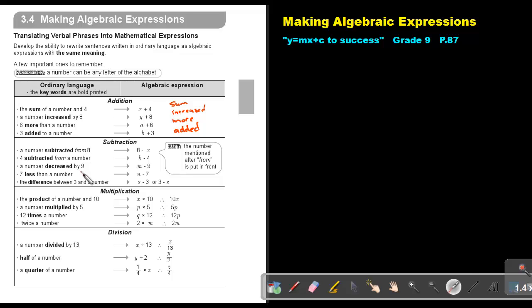A number decreased by 9, so it's n minus 9. 7 less than a number, so it's n minus 7. The difference between 3 and a number. Now it can be s minus 3 or it can be 3 minus s. If they must specify, give you more information before you can decide it's this one or this one. Again, did you notice the keywords? So the keywords was subtracted, decreased, less, difference.